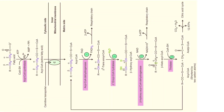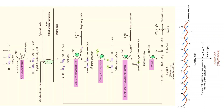Once the fatty acids enter the mitochondria, the actual beta oxidation happens there. We call this the beta oxidation cycle because in each cycle, two carbons are removed from the fatty acid in the form of acetyl-CoA. For example, the predominant fatty acid subjected to beta oxidation in our body is palmitic acid, a 16-carbon fatty acid. After activation and entry into the mitochondria, in the first cycle, two carbons are removed, so at the end of four steps, two carbons are released as acetyl-CoA.